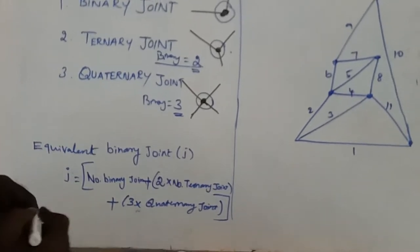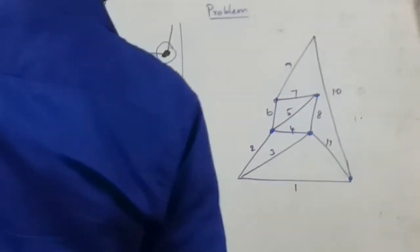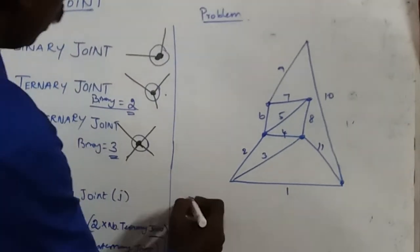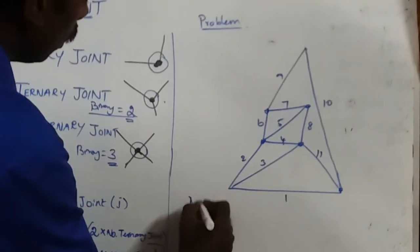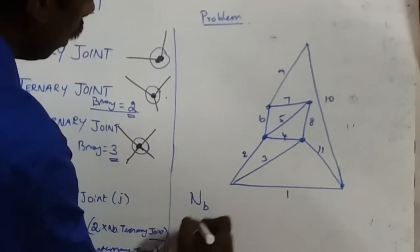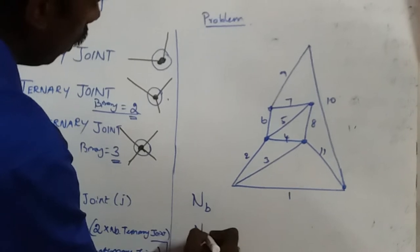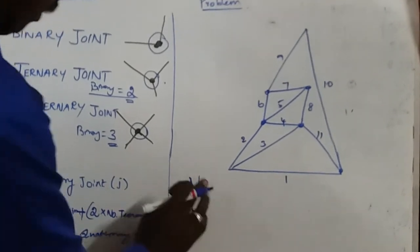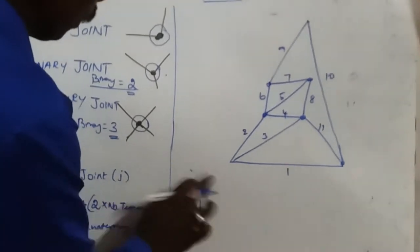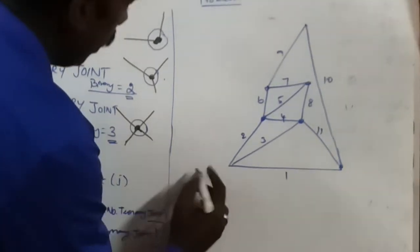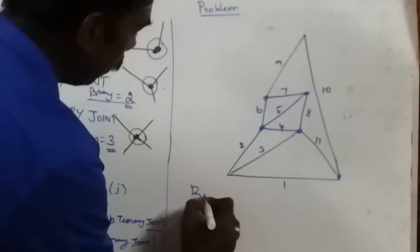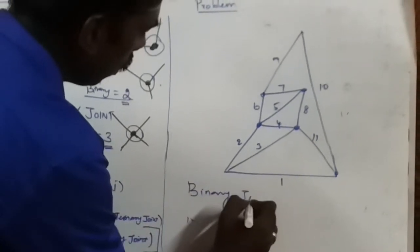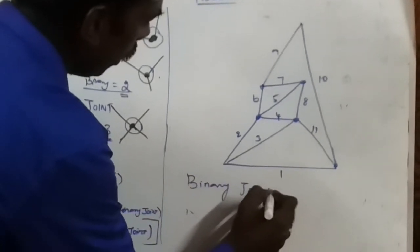Now we apply this formula to the problem. How many binary joints are there? Looking at the diagram, a binary joint has only two links in the connection - there is only one binary joint.